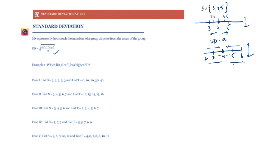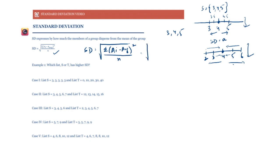This is what we would be expected to know for GMAT. The formula is: SD equals the square root of variance, where variance is the sum of (aᵢ minus the mean)² divided by the number of elements. For the set {3, 4, 5} with mean 4, we calculate: (3−4)² + (4−4)² + (5−4)², all divided by 3, then take the square root.